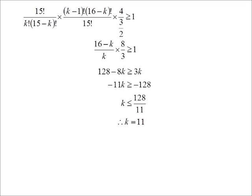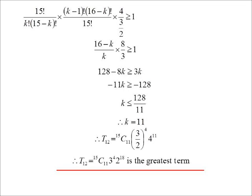So term 12 would be the greatest term: 15C11. I'm not going to leave that one like that because 2^4 and 4^11 can be tidied up—4 of course is 2^2, so that's 2^22 divided by 2^4, we get 2^18. And that's a bit neater.